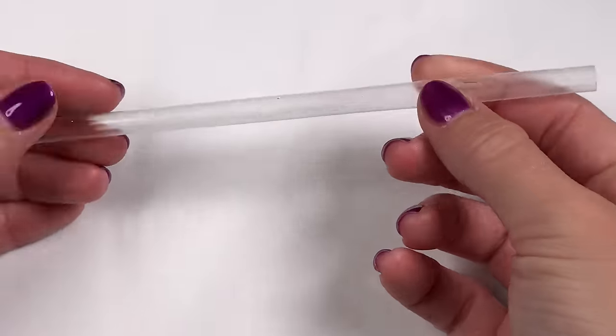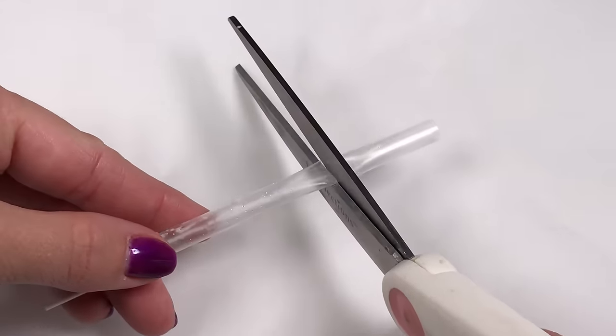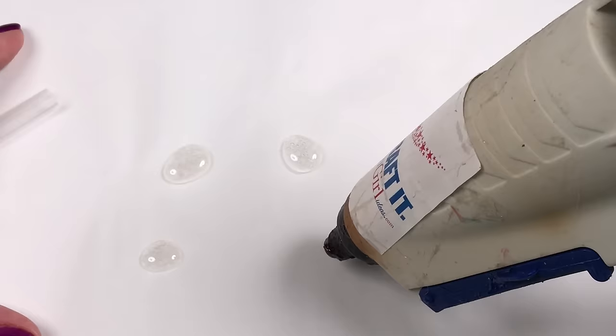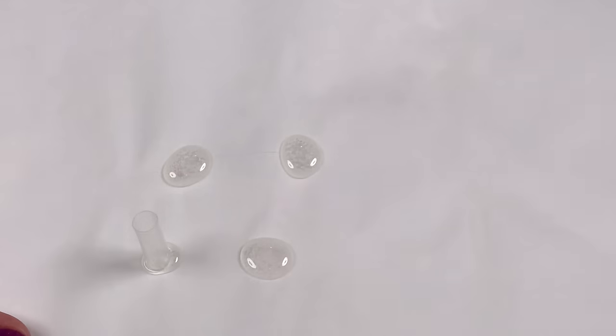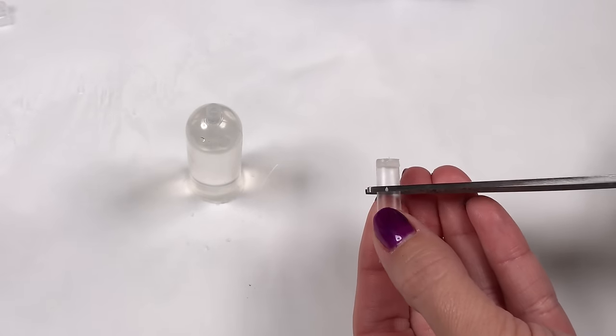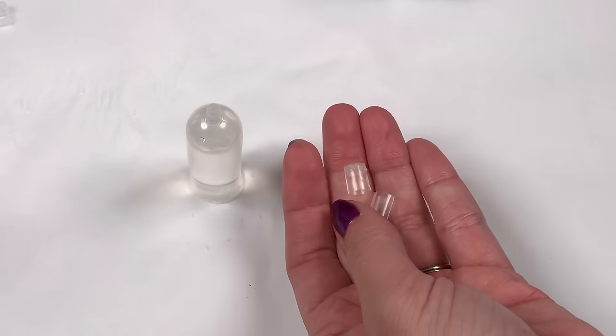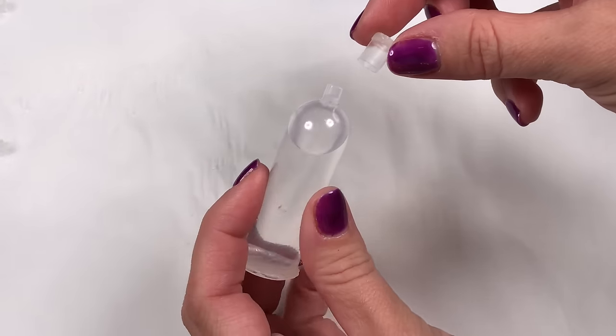Now take a clear straw that will fit over the neck of the water bottle and cut it into small pieces. Seal one side by using the hot glue method. Cut it down to size, and this is the cap for your water bottle. Place it right on top, and you have a doll size water bottle.